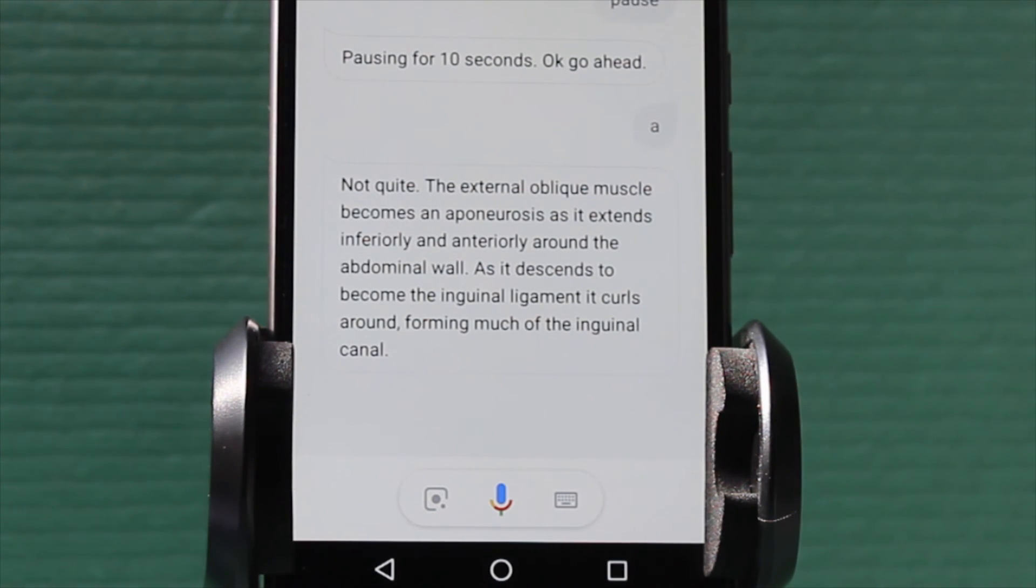Not quite. The external oblique muscle becomes an aponeurosis as it extends inferiorly and anteriorly around the abdominal wall. As it descends to become the inguinal ligament, it curls around forming much of the inguinal canal.